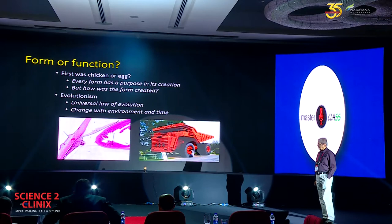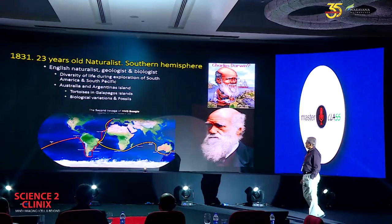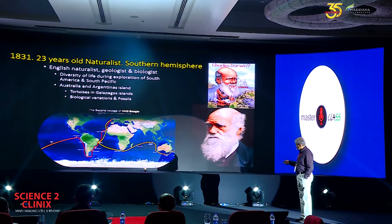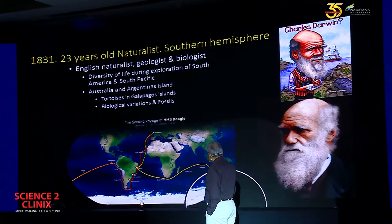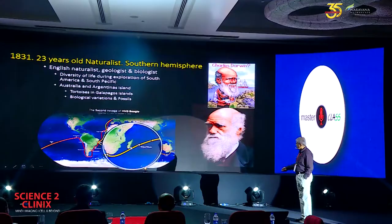Every form has a purpose in its creation, but how was the form created? We'll have to go back to evolutionism, where the universal law of evolution was propagated by none other than Charles Darwin. Darwin, when he was 23 years old, went around the southern hemisphere, starting from the United Kingdom, into the Pacific Ocean, came to Australia, came to Africa, and then went back. It took about five years of traveling all around the world, and he saw the diversity of life all over.